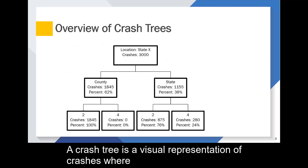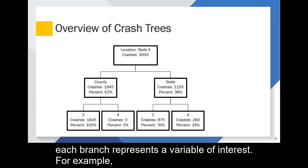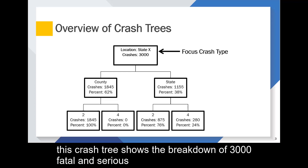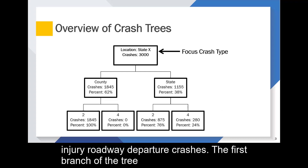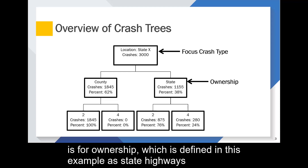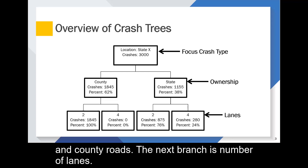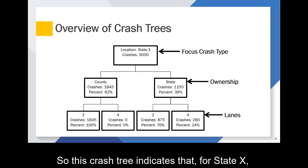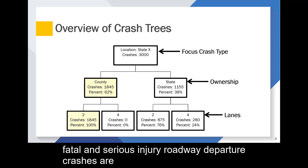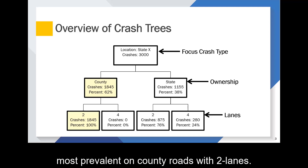A crash tree is a visual representation of crashes where each branch represents a variable of interest. For example, this crash tree shows the breakdown of 3,000 fatal and serious injury roadway departure crashes. The first branch of the tree is for ownership, defined as state highways and county roads. The next branch is number of lanes. This crash tree indicates that, for state X, fatal and serious injury roadway departure crashes are most prevalent on county roads with two lanes.